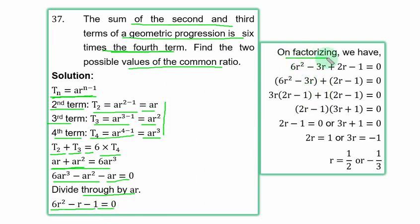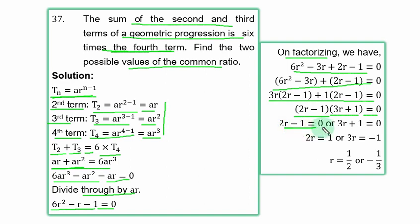To solve, factorize the quadratic. Group the terms in twos, factor out the common term from each group, and at this point (2r − 1) is common. Factor it out and you are left with (3r + 1) as the other factor. Equate each factor to zero and transfer the constant terms: divide by 2 and by 3 respectively, giving r equal to 1/2 or −1/3.